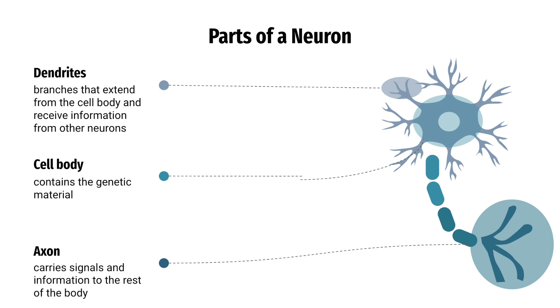Dendrites are small branches that extend from the cell body and receive information from other neurons. The axon is this long portion that carries signals and information to the rest of the body.